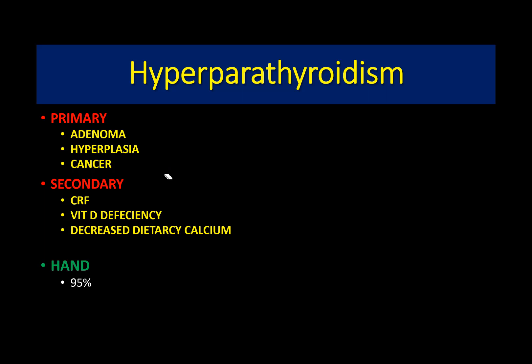Secondary hyperparathyroidism is caused by anything that reduces calcium levels in the blood. Vitamin D deficiency or decreased dietary calcium intake are causes. Chronic renal failure prevents activation of vitamin D, which in turn reduces calcium levels in the blood, leading to hyperparathyroidism.